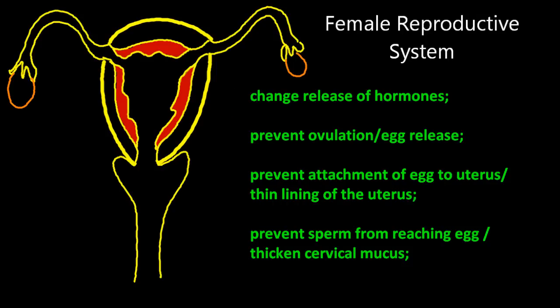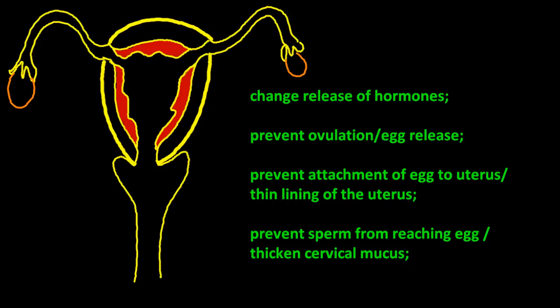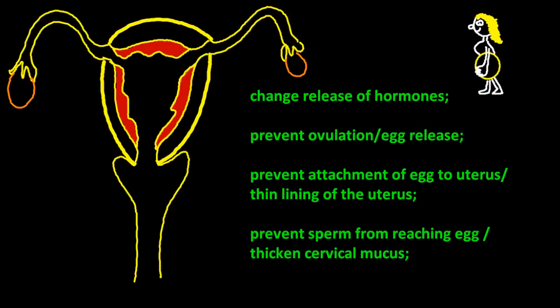The minimum you need to know is in green. The oral contraceptive changes the release of hormones — specifically FSH, which is follicle-stimulating hormone, or the luteinizing hormone, LH. These are generated in the pituitary gland and the hypothalamus in the brain.